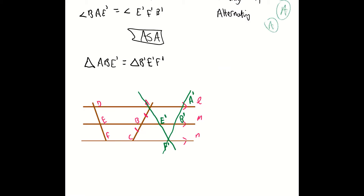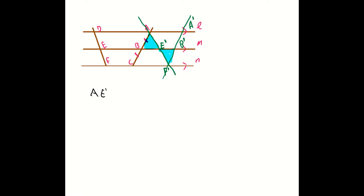I've now proved my two triangles are congruent to each other. Don't forget what the aim of the game is: to prove that the length ED is equal in length to EF. So I'm going to state that the length AE dash is equal in length to DE. Looking at the image, AE dash is equal in length to DE because, in my constructions, I assumed they were parallel and have created a parallelogram. So opposite ends of a parallelogram — that's my statement and my reasoning.